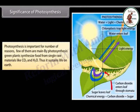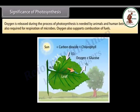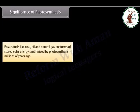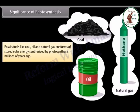Photosynthesis is important for a number of reasons. By photosynthesis, green plants synthesize food from simple raw materials like CO₂ and H₂O, thus sustaining life on earth. Oxygen released during photosynthesis is needed by animals and human beings for respiration, and also supports combustion of fuels. Fossil fuels like coal, oil, and natural gas are forms of stored solar energy synthesized by photosynthesis millions of years ago.